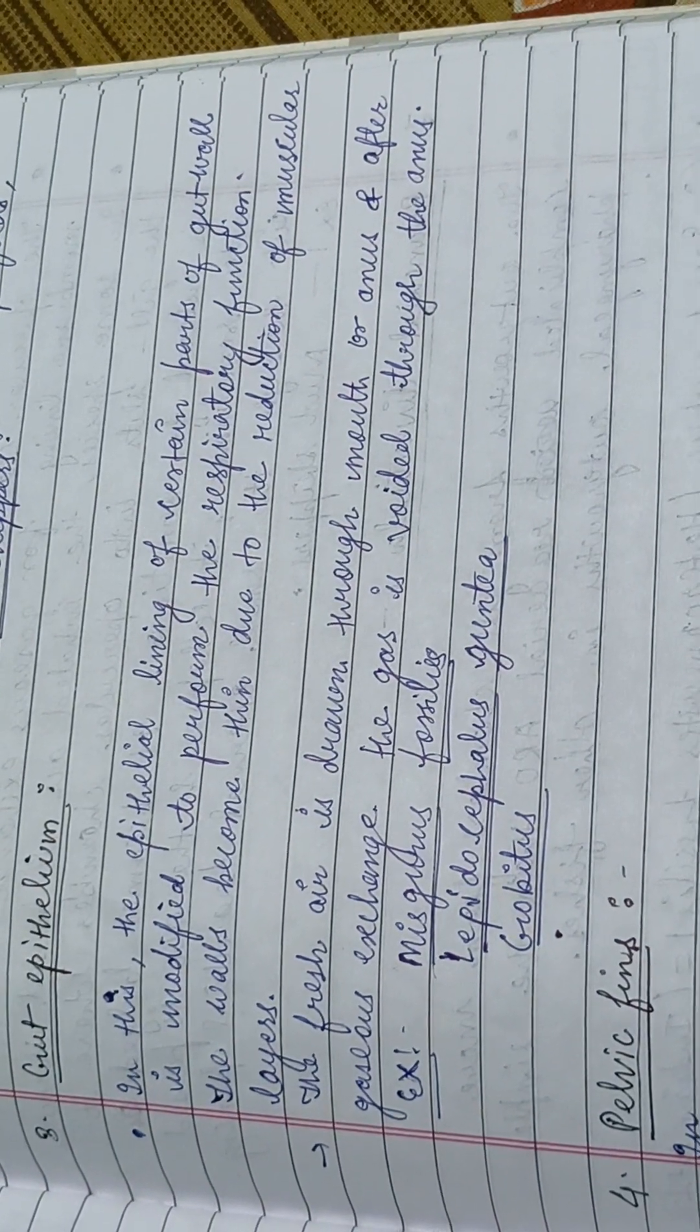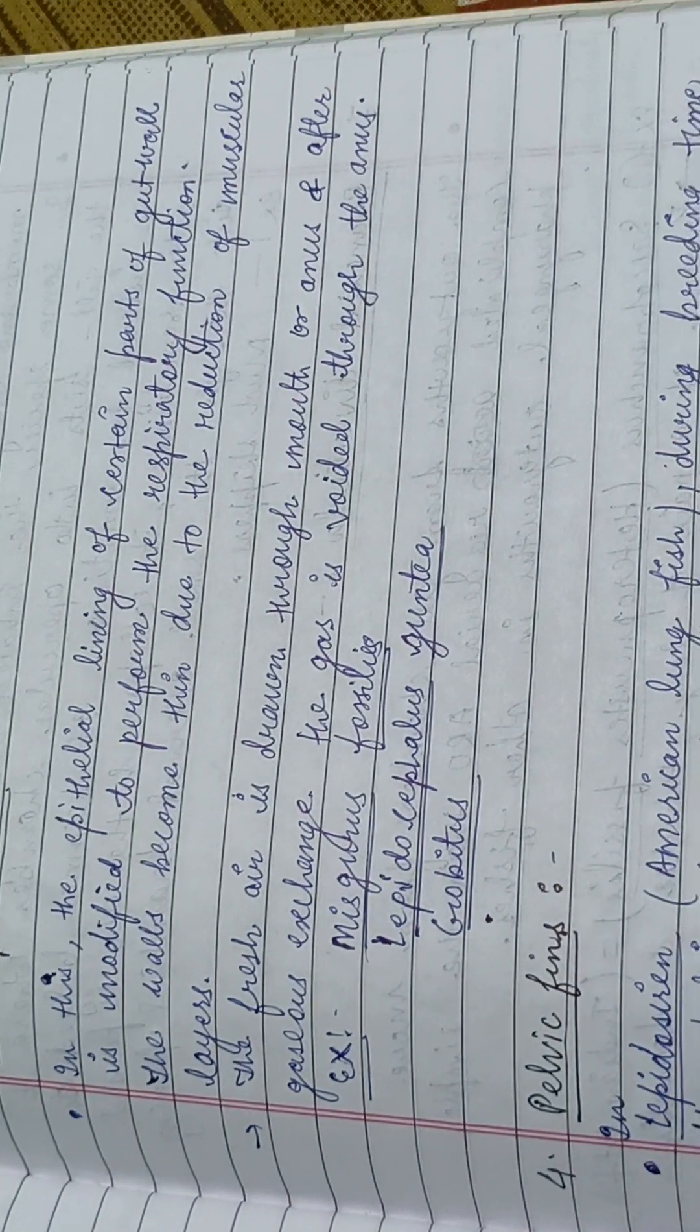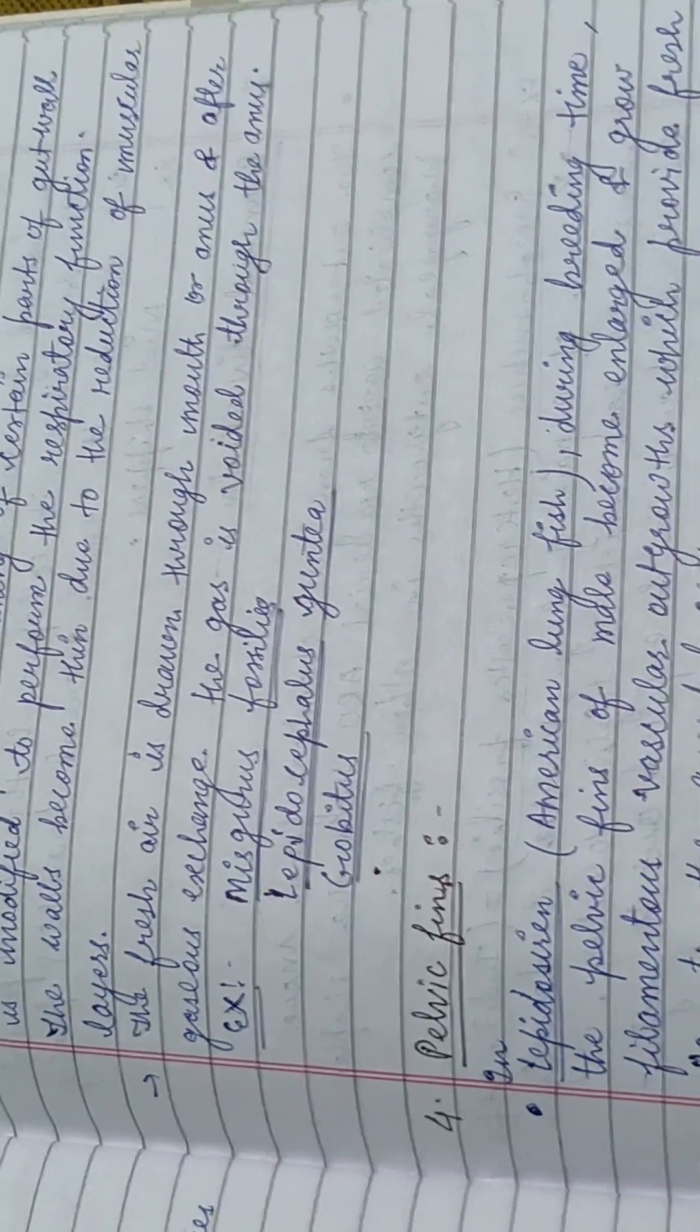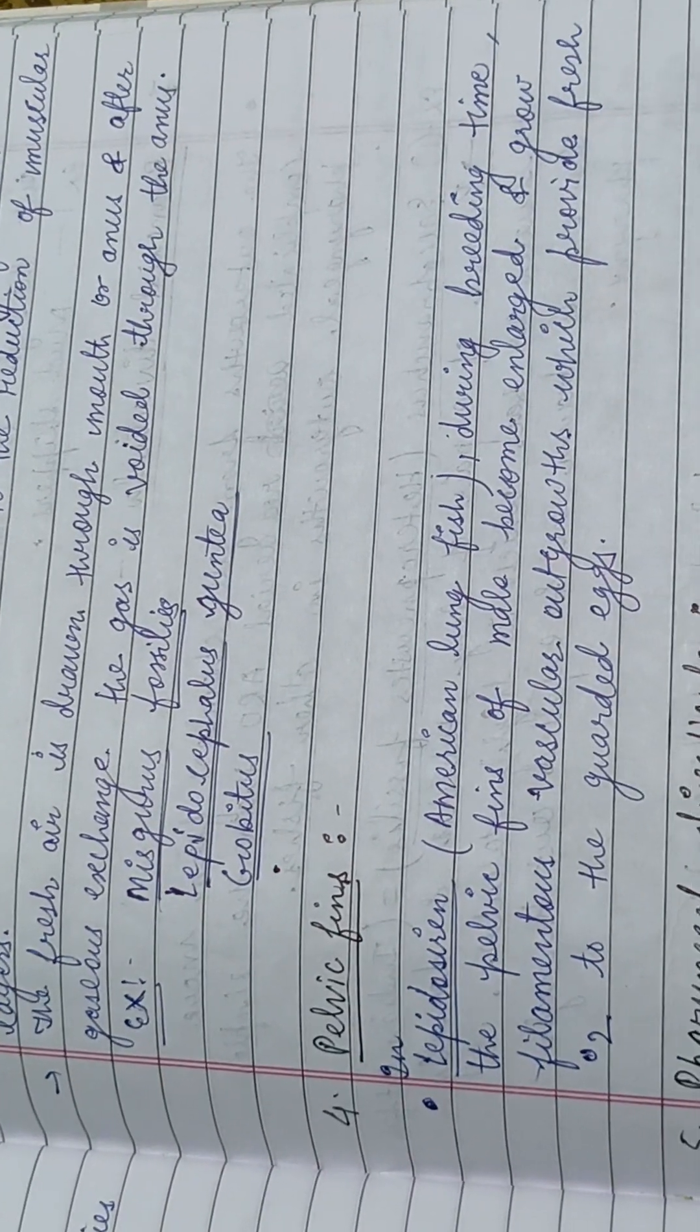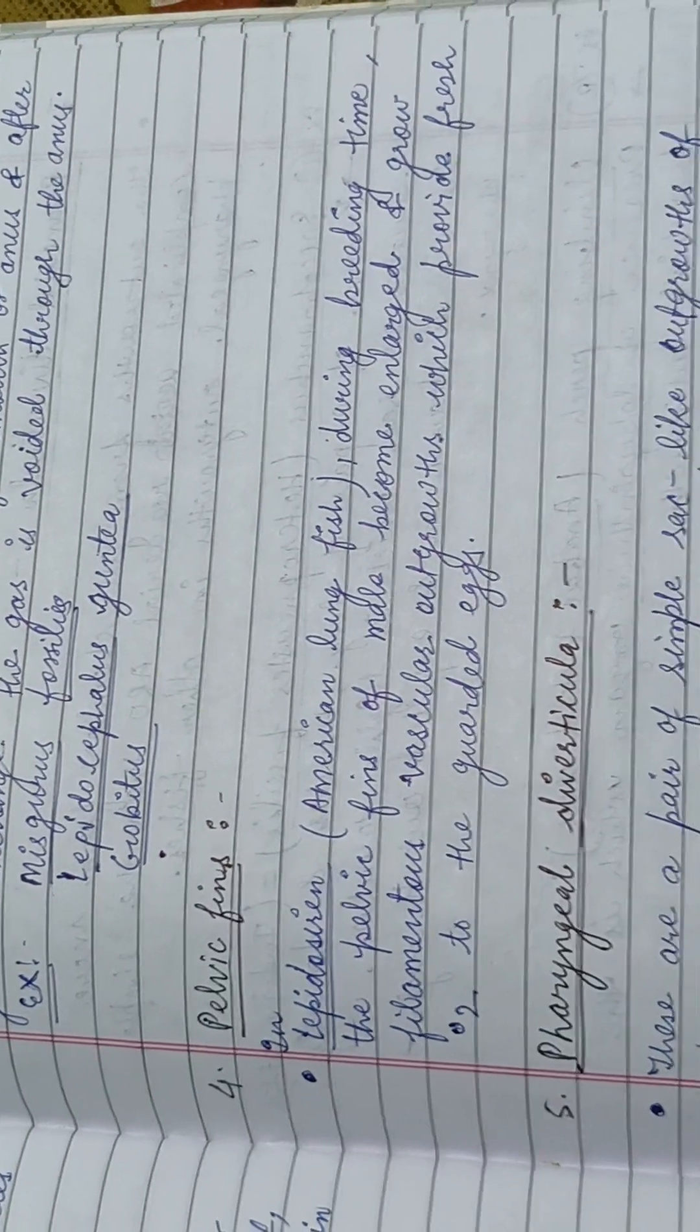Third is the gut epithelium, where the gut wall lining is modified to form respiratory functions. Examples are Lepidocephalus guntea, Cobitis, Misgurnus fossilis.